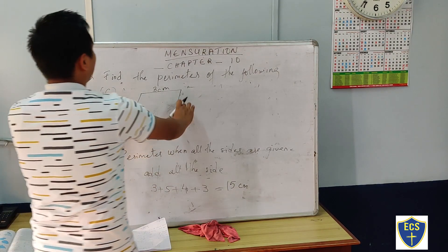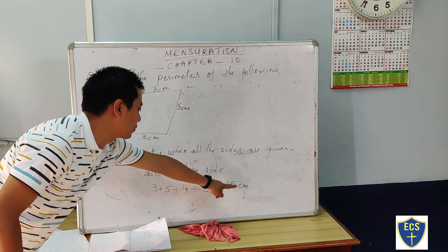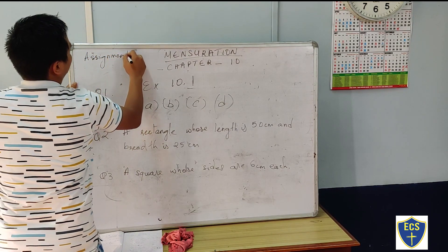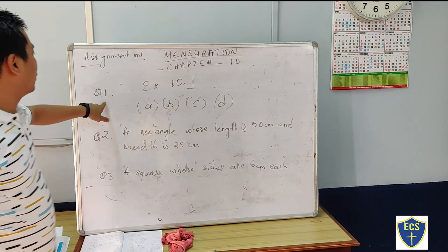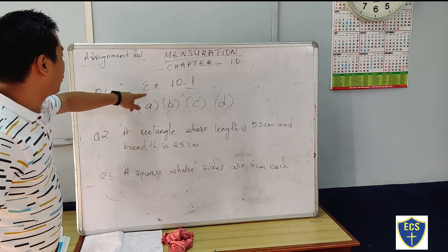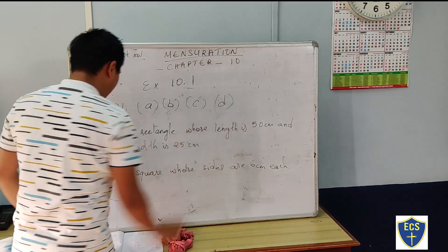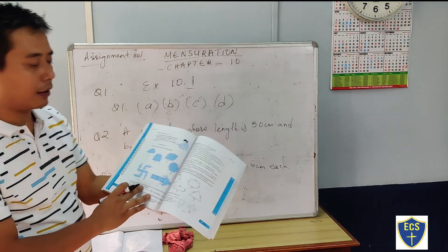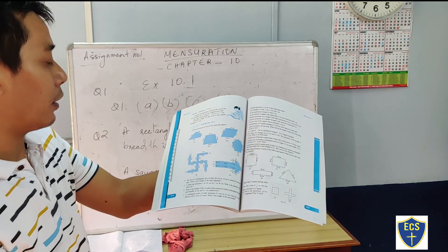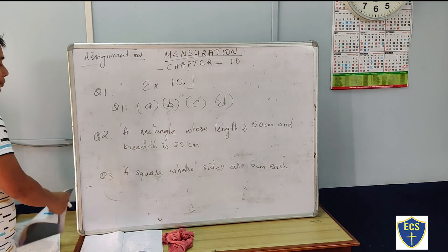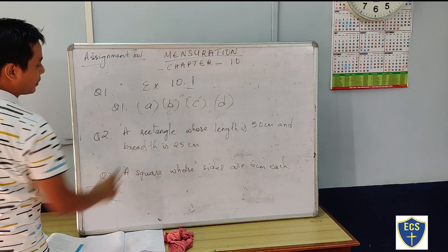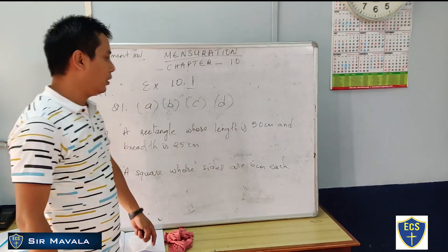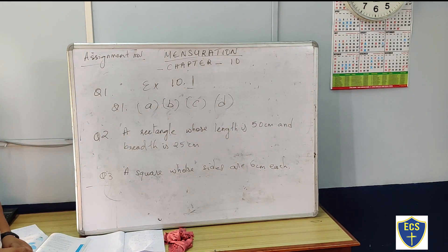When all sides are given, we have to add all the sides: 3 plus 5 plus 4 plus 3 equals 15. I'm going to give you assignment number 1. Question 1: exercise 10.1, question number 1, parts A, B, C, D, page 212 — all sides are given in the figure, so add all the sides. Question 2: a rectangle whose length is 50 cm and breadth is 25 cm. Question 3: a square whose sides are 6 cm each. That's enough for today, thank you.